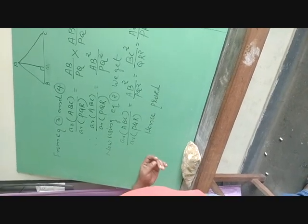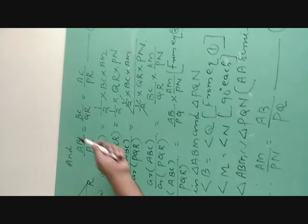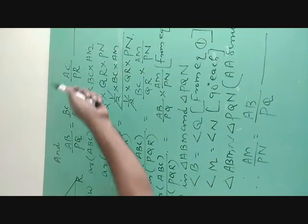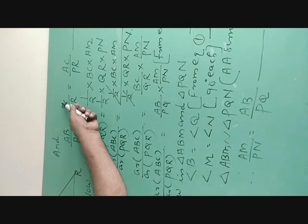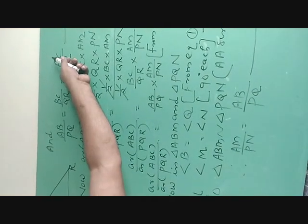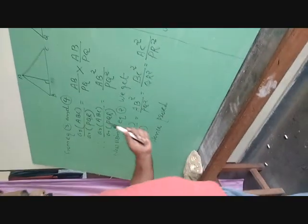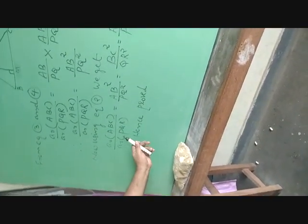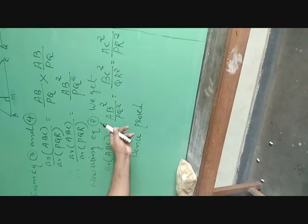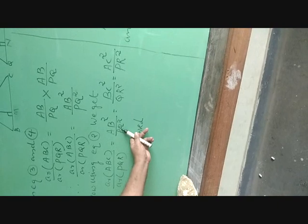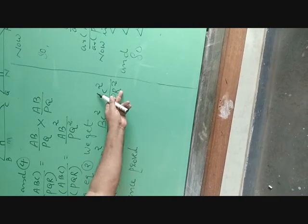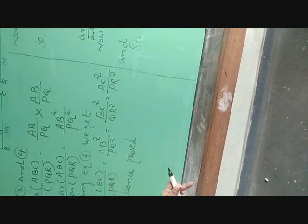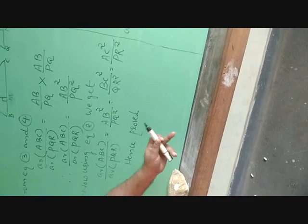Then, from equation number 2, AB by PQ equals BC by QR equals AC by PR. Therefore, AB² by PQ² equals BC² by QR² equals AC² by PR². So, area of triangle ABC divided by area of triangle PQR equals AB² by PQ² equals BC² by QR² equals AC² by PR². This is the theorem, and it is now proved.